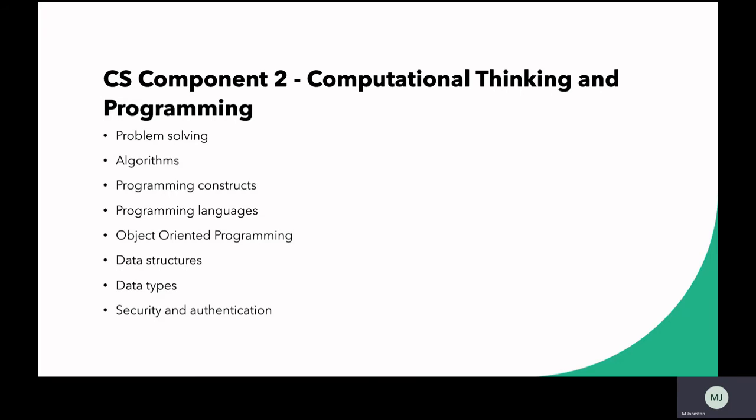Component three is an unweighted element of the course, but it teaches students the practical elements of programming, problem solving, developing algorithms, and object-oriented programming. The knowledge built in this module will help within the exam for component two, because it involves the application of programming — students will have that practical knowledge and be able to speak authoritatively in the exam.